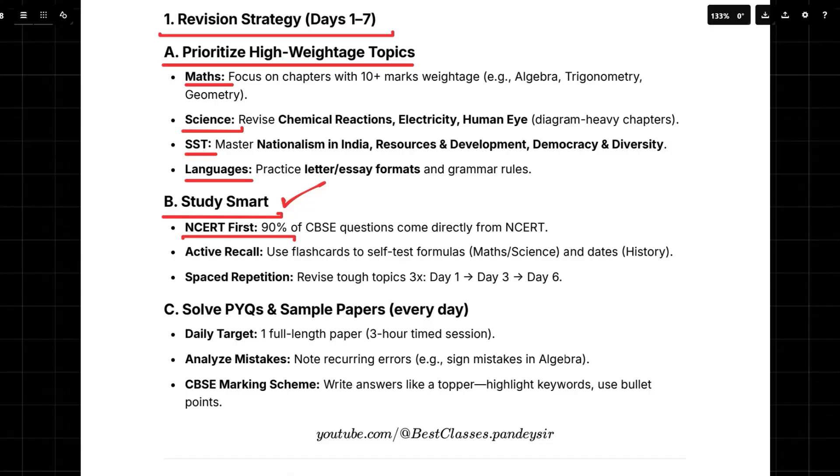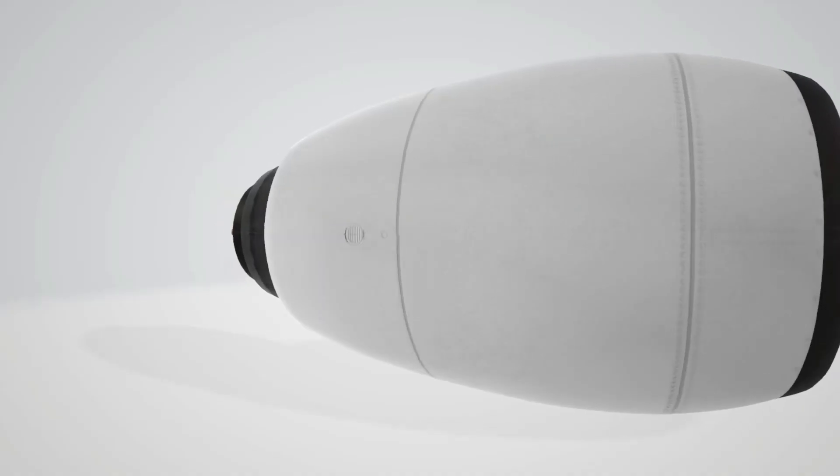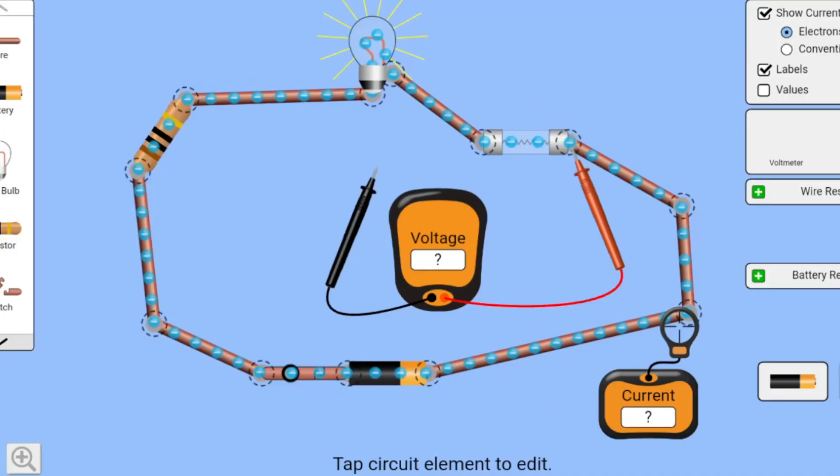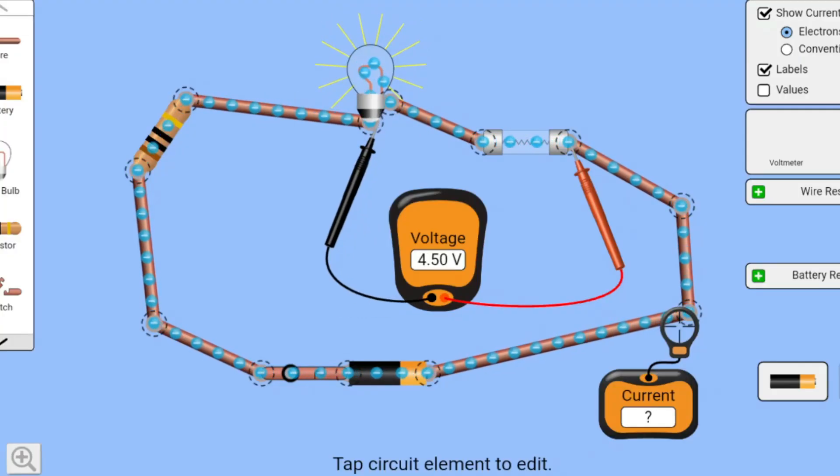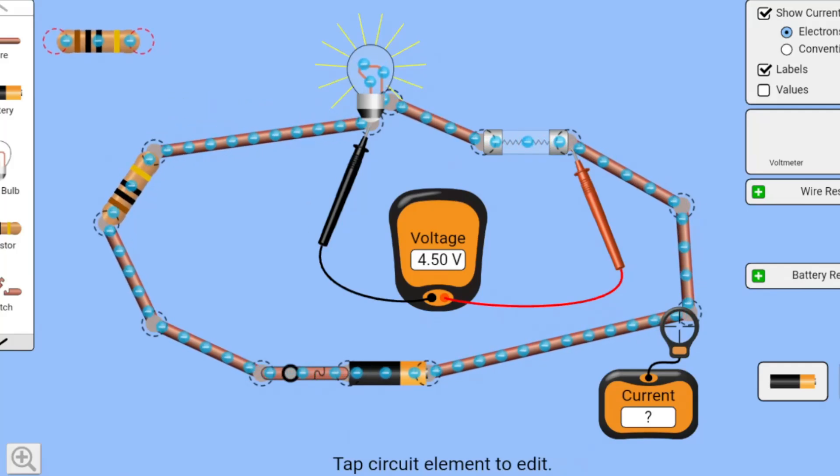They talk a lot about this technique called active recall. Active recall? What's that? It's basically forcing your brain to retrieve information. So instead of just reading and hoping it'll stick, you're actually testing yourself. Think flashcards for all those math formulas, key dates in history, anything you need to memorize. I used to love making those. And what about these sample papers and question banks like PYQ, how useful those are and what do you think of that?